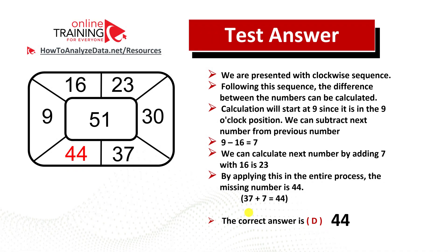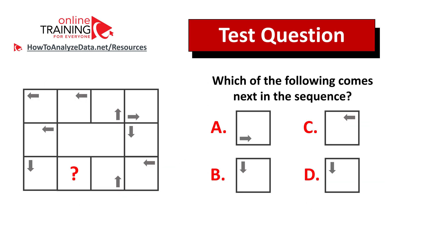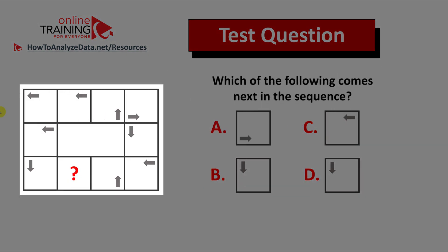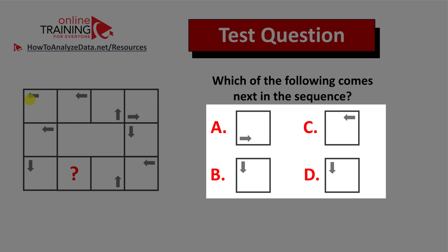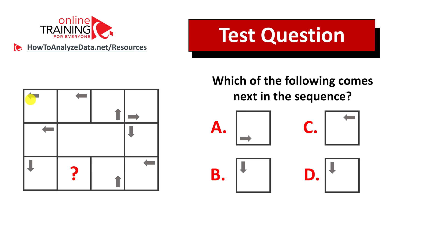Hopefully you answered this question correctly, but in case you need more questions or practice problems, please make sure to check out my e-book in the description of this video. Here's a question from the real test you can try to solve on your own — which of the following comes next in the sequence? You're presented with a sequence of boxes, each containing an arrow pointing in a different direction, and four choices A, B, C, and D. Feel free to pause this video and try this challenge; post your answer and rationale in the comments and I'll give you my feedback. I will also post a detailed answer in my future video, so make sure to subscribe.